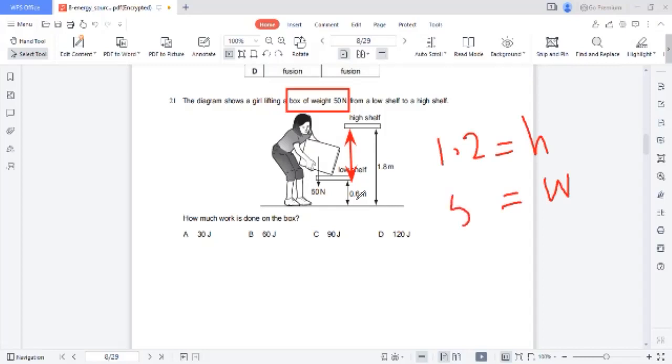Height is 1.2 and weight is 50 Newtons. Work done is moving in upward direction, so work done is potential energy. It would be weight into height, so 50 Newtons times 1.2 is 60 Joules. 60 Joules is the amount of work done.